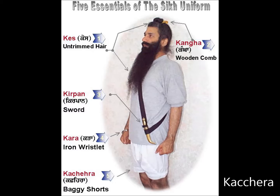This garment allowed the Sikh soldier to operate in combat freely and without hindrance, because it was easy to fabricate, maintain, wash, and carry compared to other traditional undergarments of that era like the dhoti. The Kachera symbolizes self-respect and reminds the wearer of mental control over lust, one of the five evils in Sikh philosophy. It features an embedded string that circles the waist, which can be tightened or loosened as desired and knotted securely.